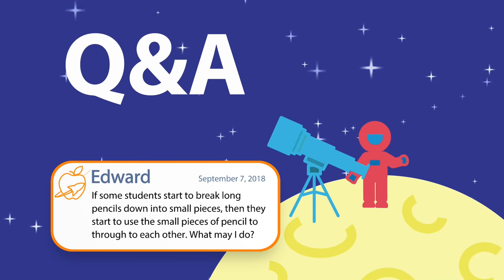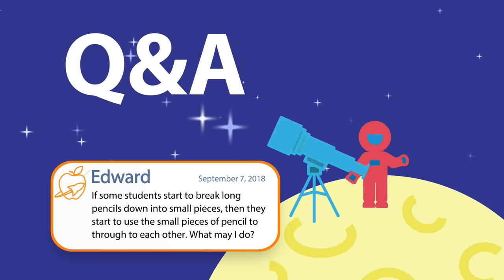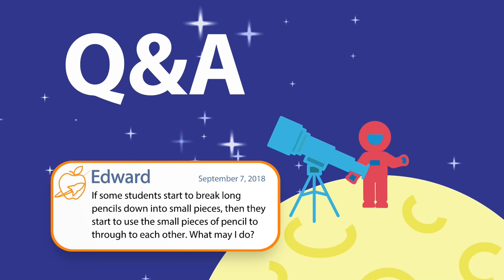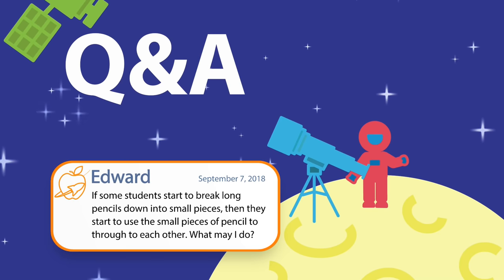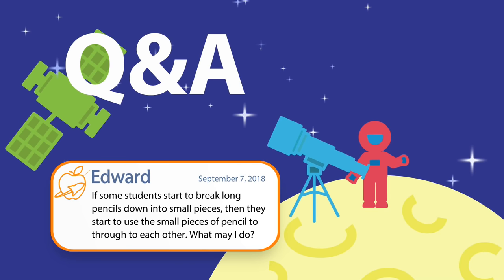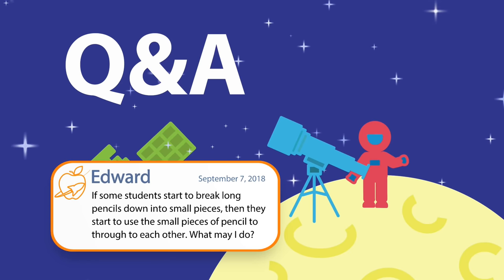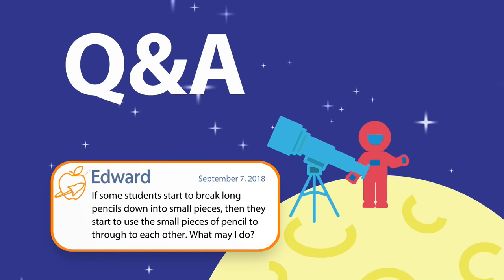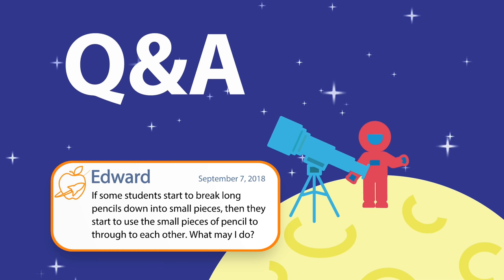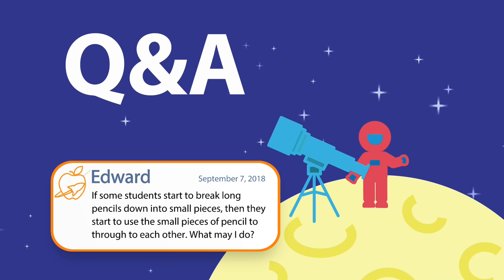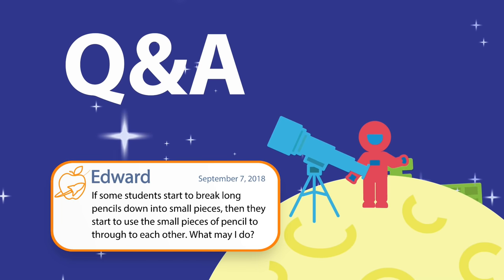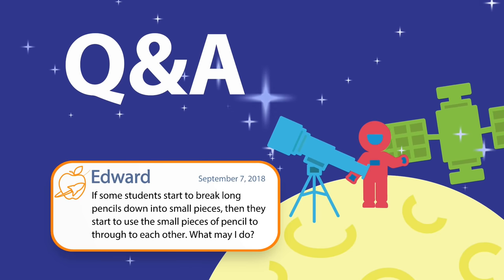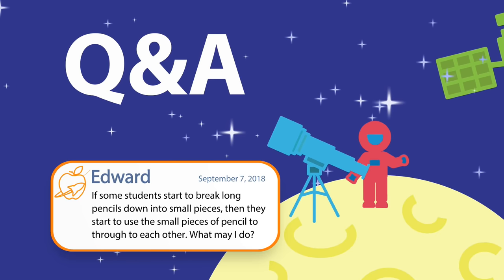Edward asks: 'If some students break long pencils down into small pieces and then throw them at each other, what may I do?' First, do you control the materials? If so, consider providing very short, small pencils like you might see at a mini golf course — making it impossible for them to break those pencils down. You may also want to revisit your rules. One classic classroom rule, especially for younger kids, is 'keep hands, feet, and objects to yourself.' This situation may be more about rules and preventative measures than procedures.